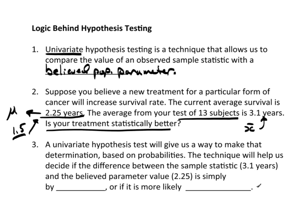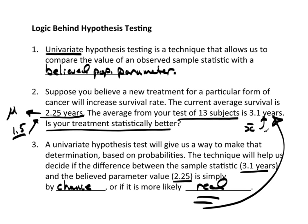The technique will help us decide if the difference between the sample statistic — 3.1 years — and the believed parameter value of 2.25 is simply by chance. Hence, it could be greater or it could be less than. Or if it is more likely real — meaning it really is bigger than 2.25, so your drug really does work better.